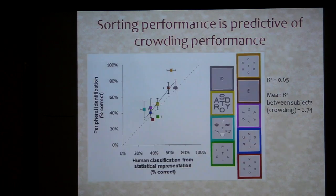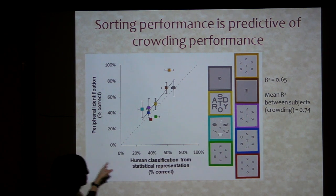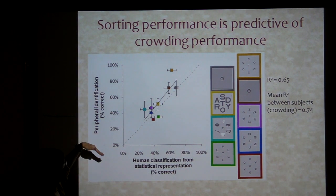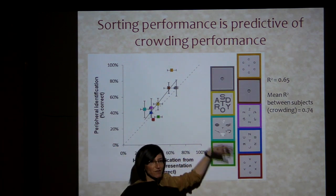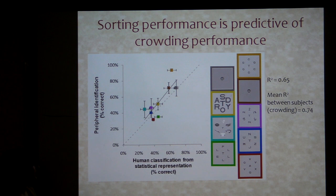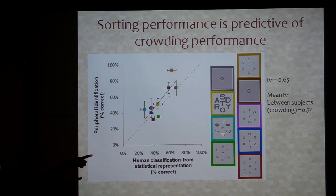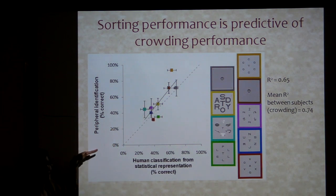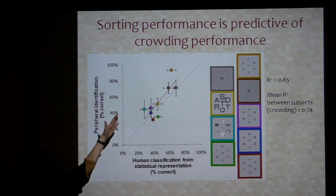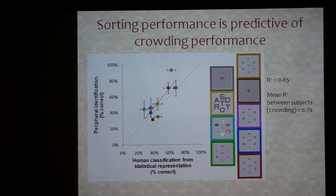We did this, and if you look at it, the sorting performance is actually quite predictive of the peripheral performance. Each one of these squares is one condition. The r-squared is about 0.65, but the mean r-squared between subjects on crowding is 0.74, so there's a limit to how good it could possibly be. And the slope is pretty close to 1 — it's not merely correlated, it's really quite predictive of the peripheral performance.